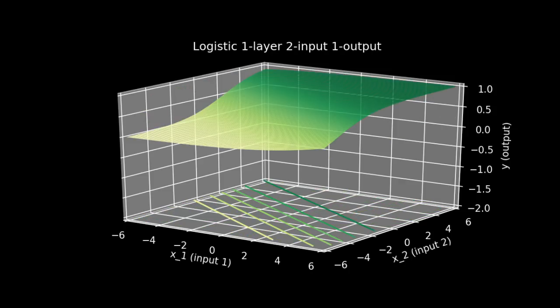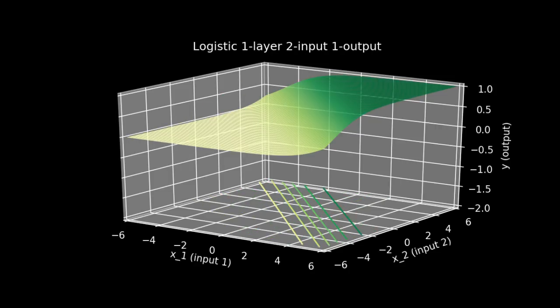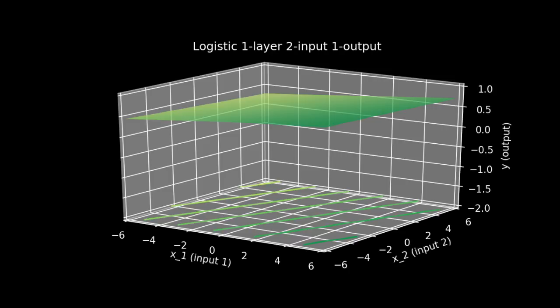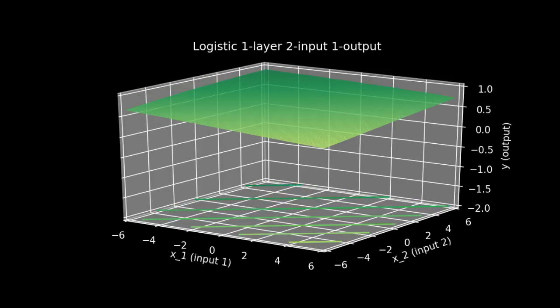Whatever the number of inputs you have, whatever dimensional space you're working in, logistic regression will always split it into two halves, using a line, or a plane, or a hyperplane of the appropriate dimensions.